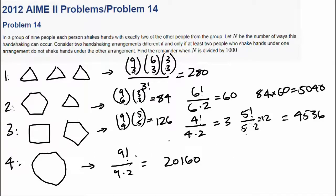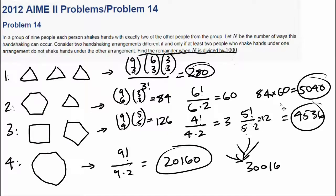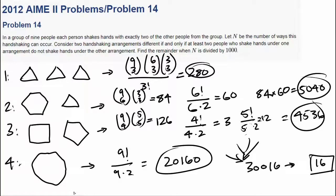We have every single possible combination. Now we just add them together: 280 plus 5,040 plus 4,536 plus 2,160. You get 30,016. For AMC, they ask for the remainder when divided by 1,000. So the answer is 16. Hope you found this question interesting. I thought it was a really nice question in that you had to use a little bit of graph theory in relation to combinatorics. See you next week.